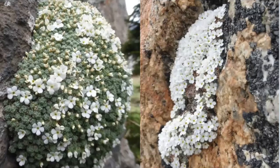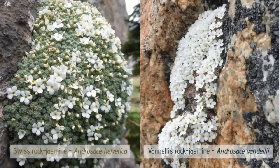Two closely related plants in the rock jasmine family are beautiful cushion-forming plants found on exposed rock faces. They both survive by putting down deep roots into rock crevices and form large colonies over time. On the left, Swiss rock jasmine has grayish-green, slightly hairy leaf rosettes with white flowers and yellow centers, found in the western Alps on calcium-rich rocks. Vandelli's rock jasmine has dense white hairs on the leaves and is found in the inner Alps, extending down to the Apennines and even the Atlas Mountains.